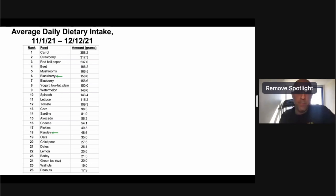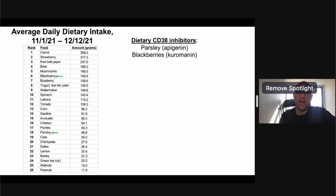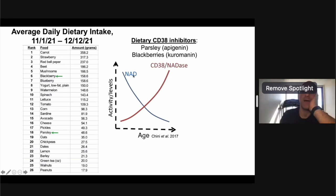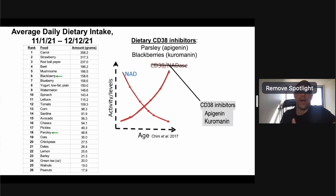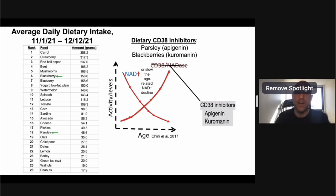Foods like blackberries and parsley contain dietary CD38 inhibitors — apigenin in parsley and cyanidin in blackberries. NAD is a metabolite involved in the health and functioning of virtually every organ system, and NAD levels decline during aging. Conversely, CD38 levels increase during aging — and that's important because CD38 is an NADase that degrades NAD. By including dietary CD38 inhibitors, I expect to increase NAD or at least slow the age-related NAD decline.